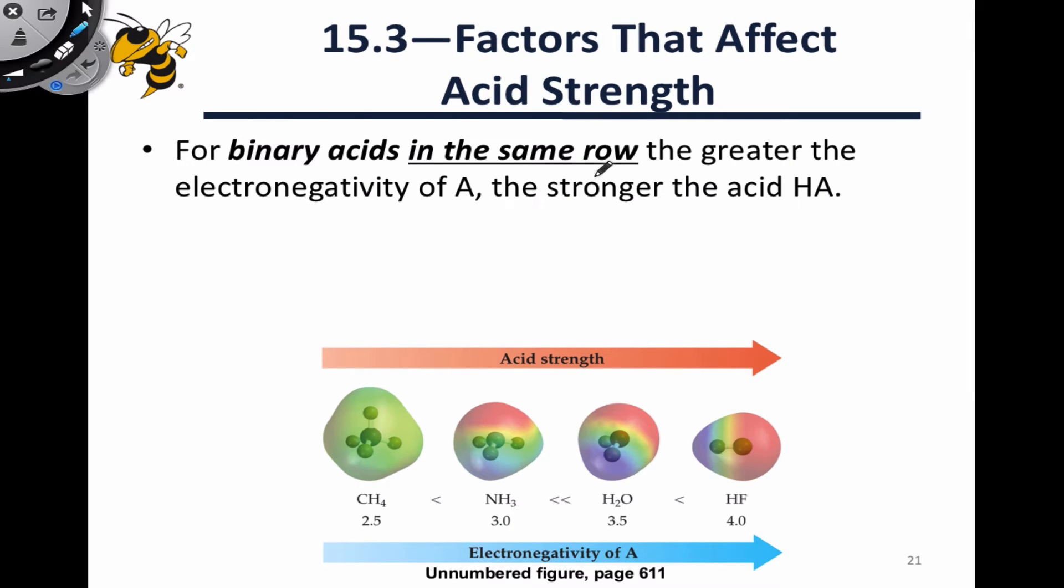For binary acids in the same row, that is the same period of the periodic table, we need to focus our attention on the polarity of the HA bond, and in particular, how polarized is the bond? How much negative charge is there on this A group or this X atom, and how much positive charge is there on the H atom? Rather than worrying about the exact numbers, we can focus instead on the electronegativity of the A atom. The more electronegative the A atom, the more partial negative charge we'll have on that atom within HA. This ultimately makes the acid stronger, because a base is going to be more attracted to the greater partial positive charge that results from having more partial negative charge on the A atom.